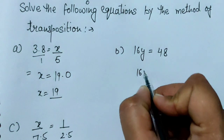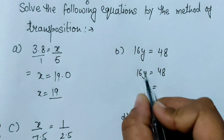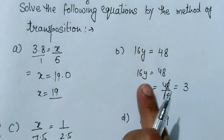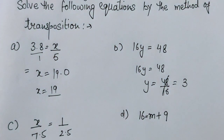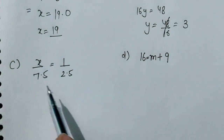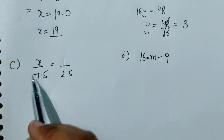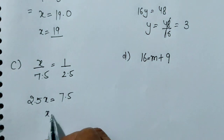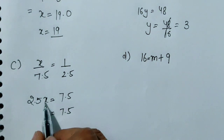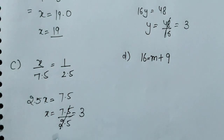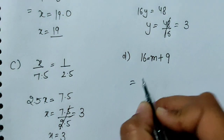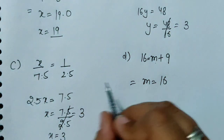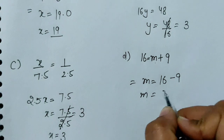Y की value find out करनी है। अगर कोई number multiply में है तो equal के इधर जाकर divide हो जाएगा। Y की value 3 आई। Next: 2.5X equal to 7.5 — 2.5 multiply है, equal के इधर जाकर divide होगा। X की value 3 आई। Next: 16 equal to M plus 9। 9 plus में है, equal के इधर जाकर minus हो जाएगा। M की value 7 आई।